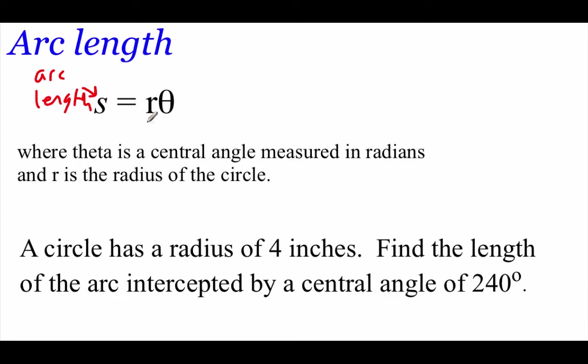So in order to find the length of the arc, what we're going to do is we're going to take this R value, which stands for the radius of our circle, times our central angle theta. Now, big thing about theta is it has to be measured in radians. So if we're given an angle in degrees, we'll have to first convert it over before we can do any work with this formula.